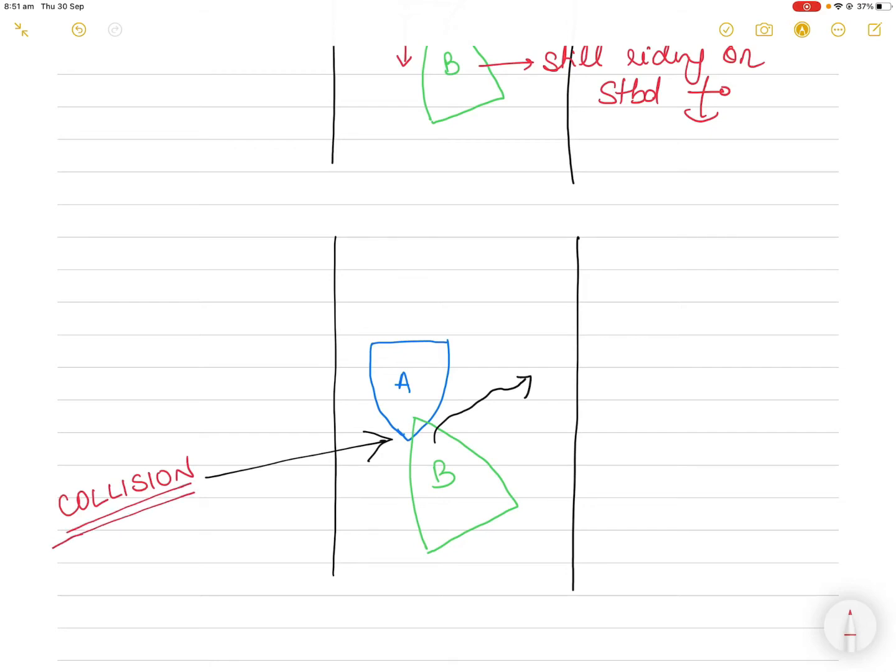Right, so when it swung in the path of vessel A, as a result there was a collision between vessels A and B. Now what vessel A said was that vessel B should have kept clear of it.